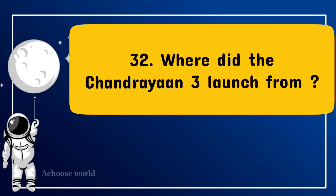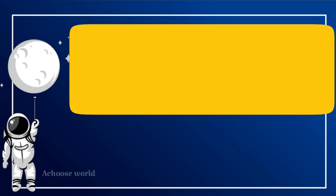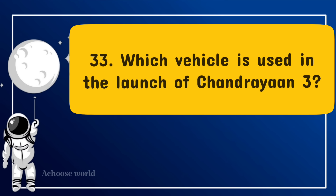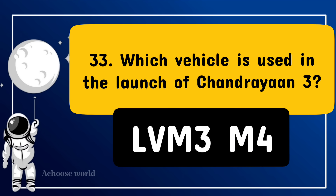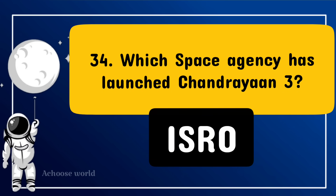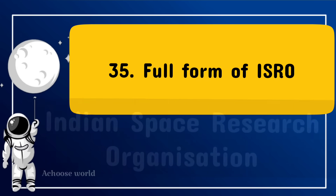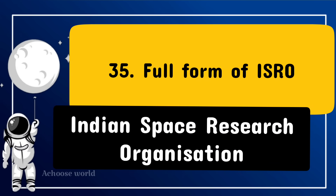Where did Chandrayaan 3 launch from? Satish Dhawan Space Centre, Sriharikota. Which vehicle was used in the launch of Chandrayaan 3? LVM3-M4. Which space agency launched Chandrayaan 3? ISRO. Full form of ISRO: Indian Space Research Organisation.